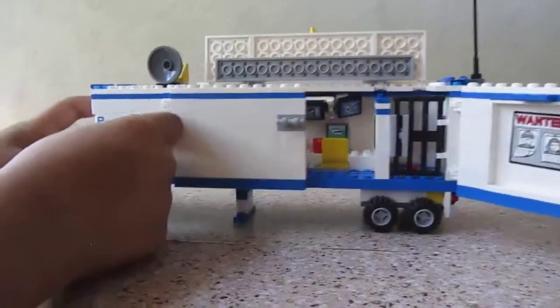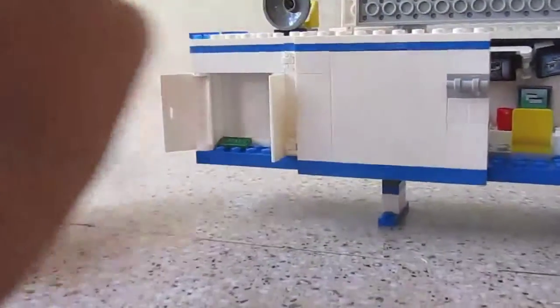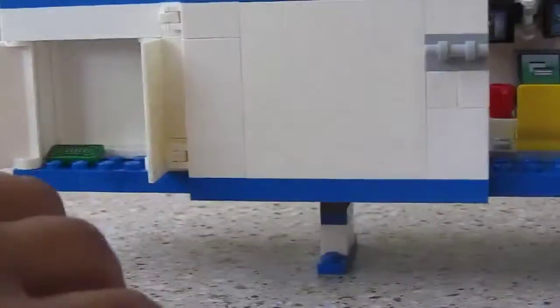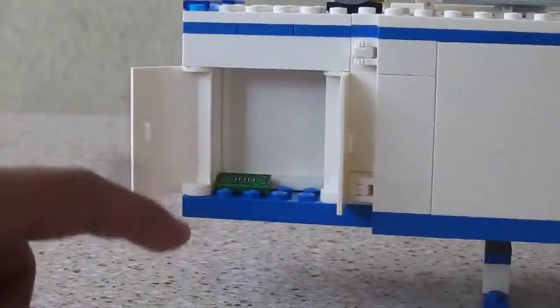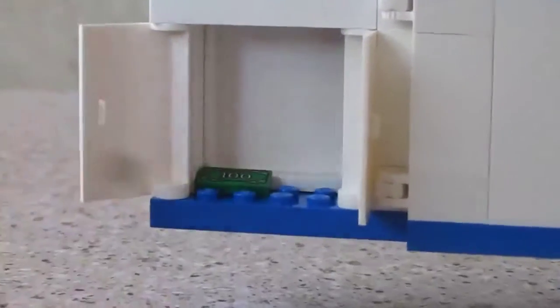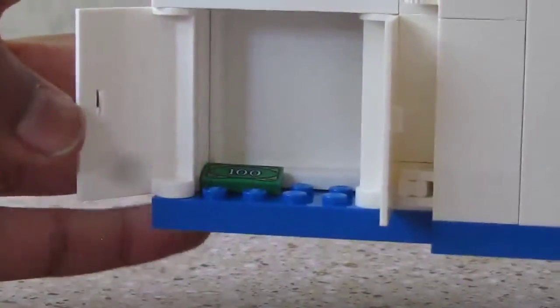But first I need to close this so you can see. This part just opens up and you put some money in there which the thief, the robber in the set stole, and you just keep it in there for safekeeping so the robber doesn't get it back.